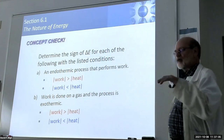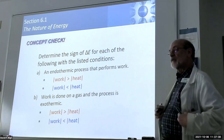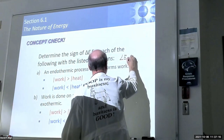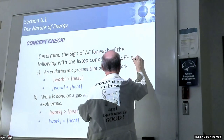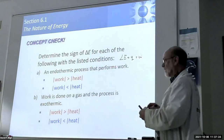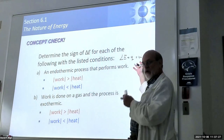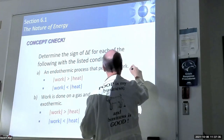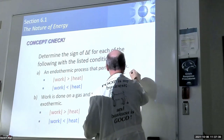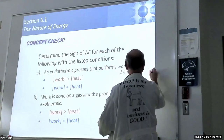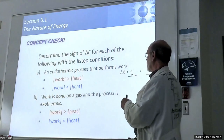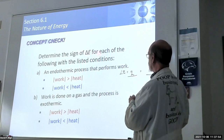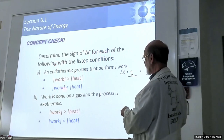Now we go back to internal energy. We're going to balance work and heat, because change in internal energy is the heat transferred plus the work being done. Change in internal energy equals Q plus W. An endothermic process has a positive Q. If that process also performs work - meaning the system does work on its surroundings - that makes W negative.